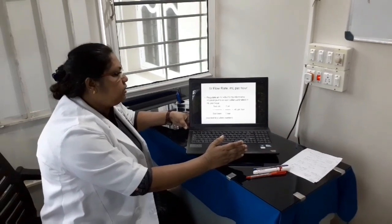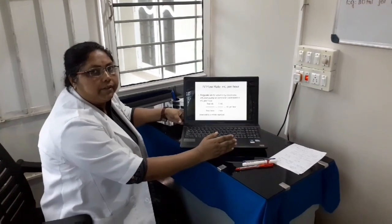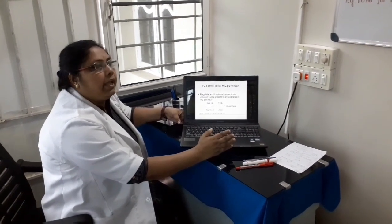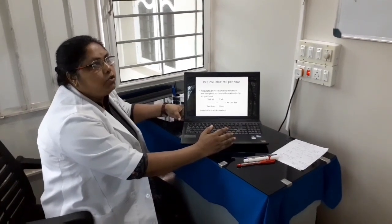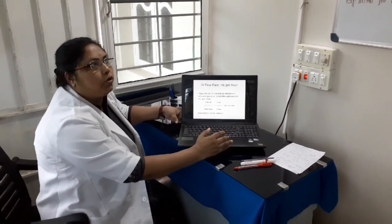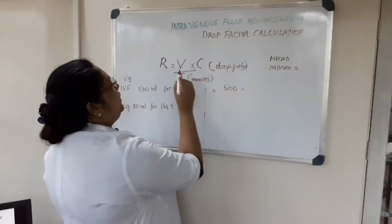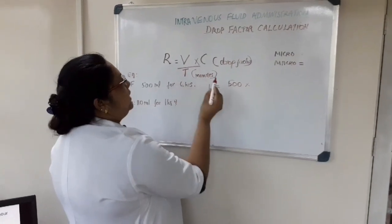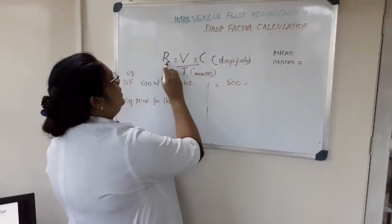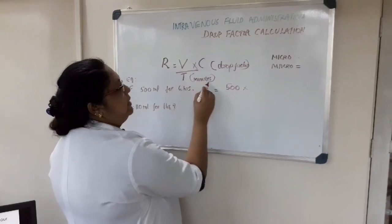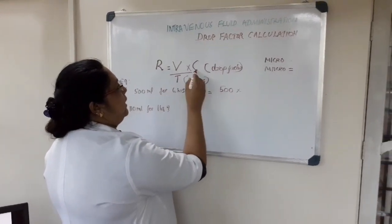Now we can do the calculation, drop factor calculation. I will show an example on the board. We can move to the board to see the example for drop factor calculation. We can see with an example for the rate calculation.